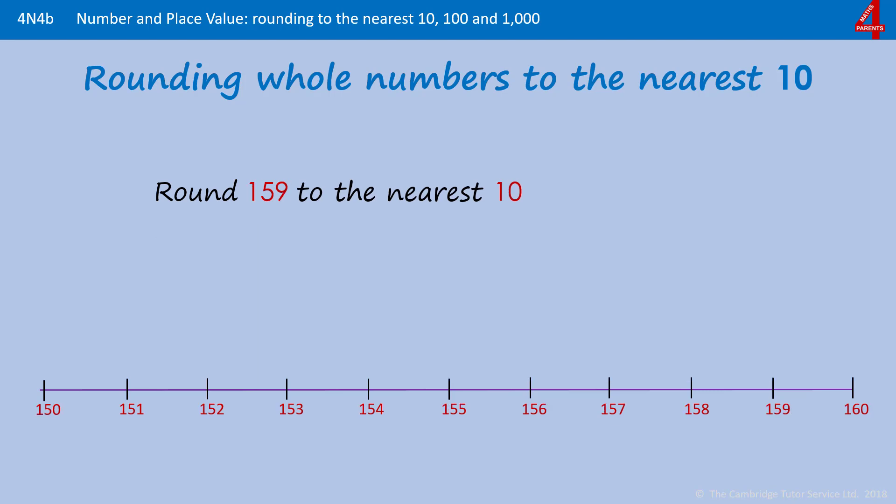This works with bigger numbers as well. So 159—the multiples of 10 either side are 150 and 160. And you can see that 159 is nearer to the 160, so that rounds up.